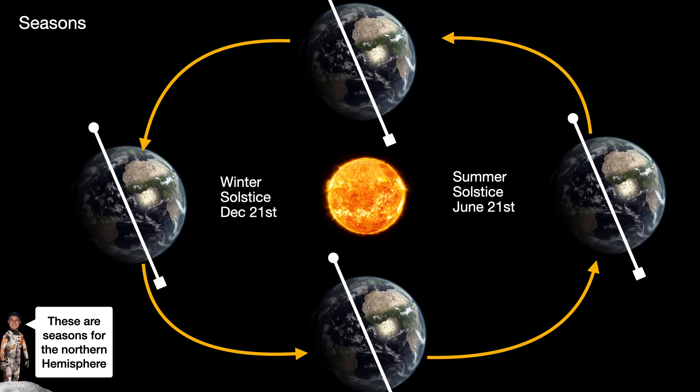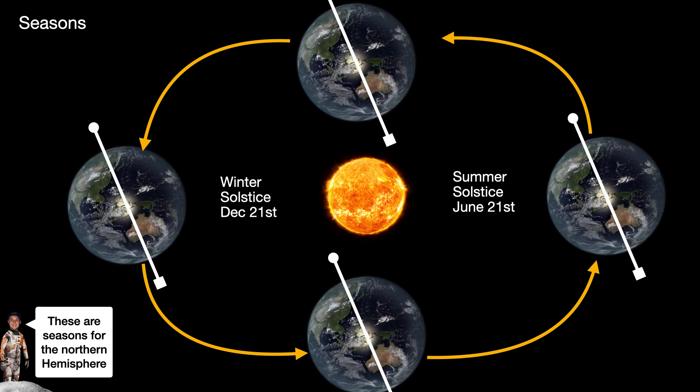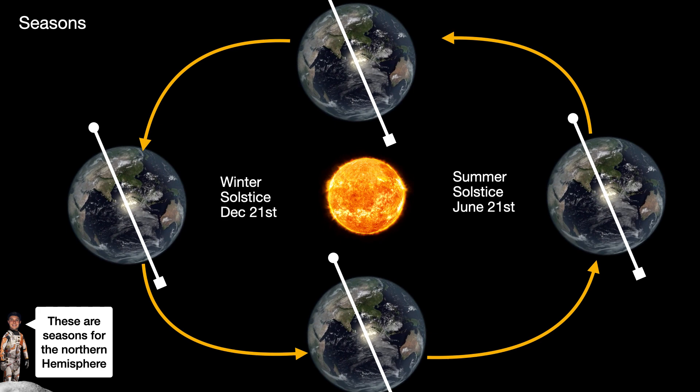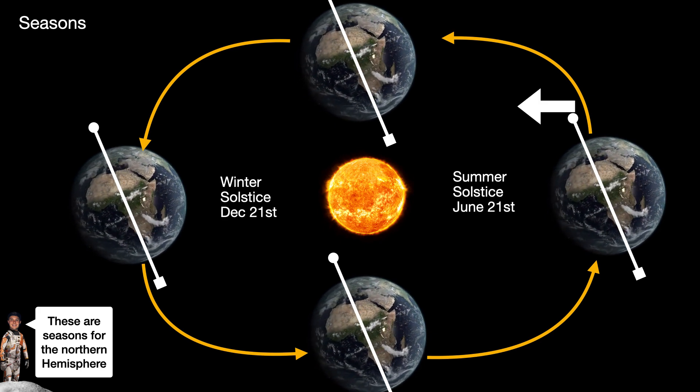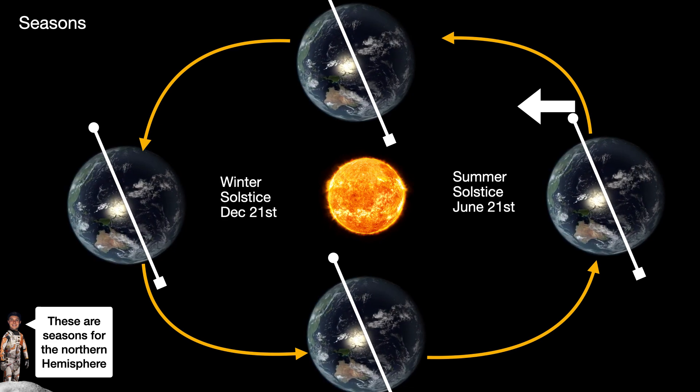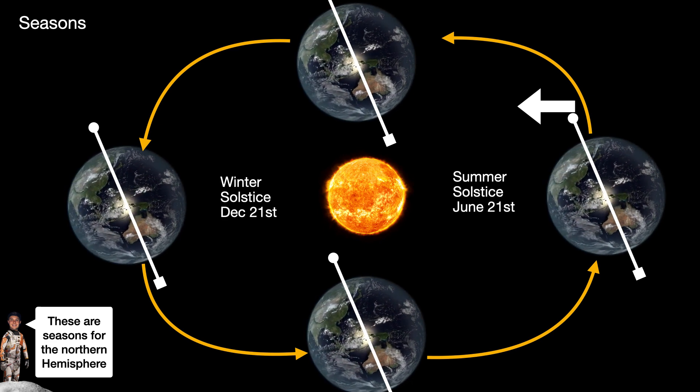Now the summer solstice, six months later, occurs on June 21st, and it is when the North Pole is pointed towards the sun the most it will be over the course of the year. This in turn gives us the longest day and shortest night of the year.